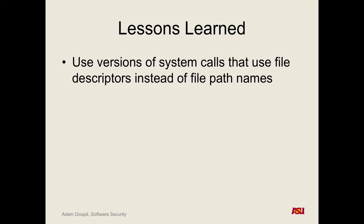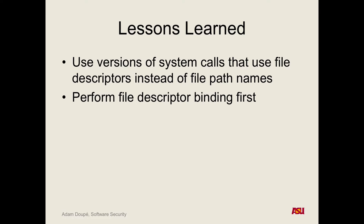The way to keep yourself safe is to use versions of system calls that only use file descriptors instead of file path names. Try to perform file descriptor bindings first. You may also be able to use some functionality to lock the file — lock the file first, then do your checks, then open the file. Through that whole time, you know that no other process can access that file.